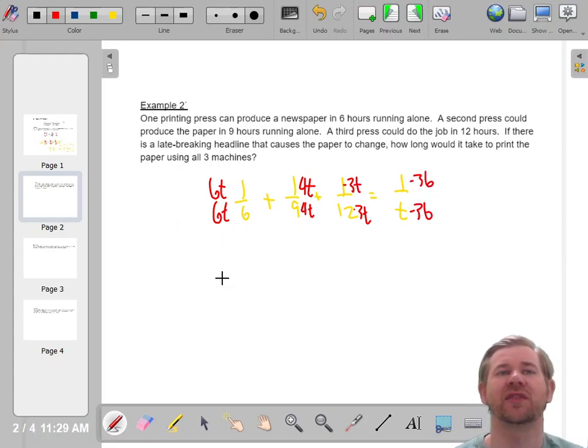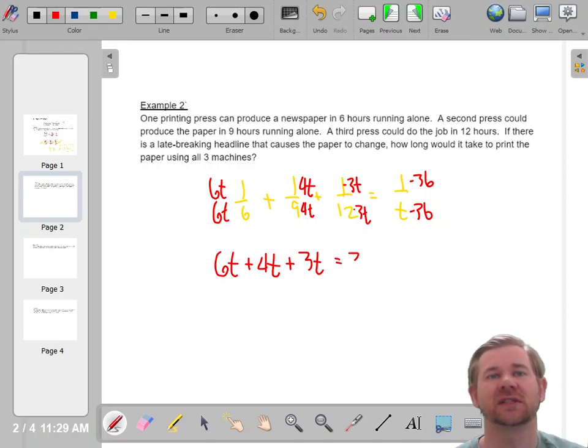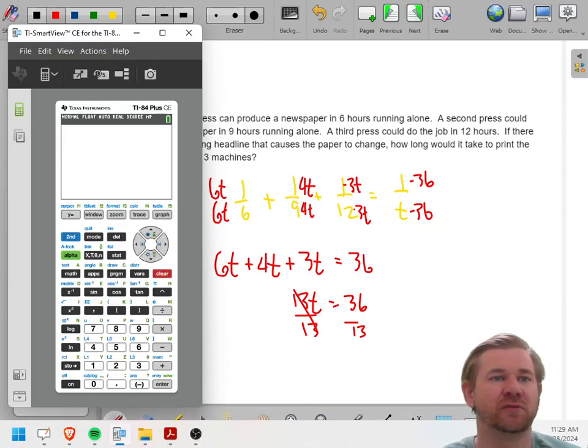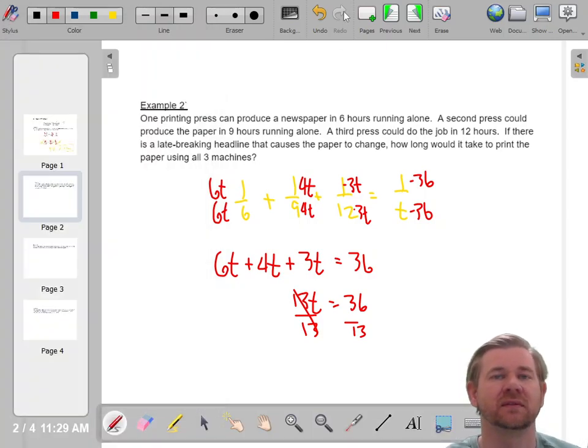This guy needs a thirty-six. Now everything is over thirty-six t, so I'm just going to look at the numerator. If everything is over thirty-six t, you can ignore it. Six t times one is six t, four t times one is four t, three t times one is three t, and thirty-six times one is thirty-six. So this ends up being thirteen t equals thirty-six, and if you divide both sides by thirteen, thirty-six over thirteen, I'll get my calculator. Thirty-six over thirteen, two point seven seven, we'll say two point eight, two point eight hours.